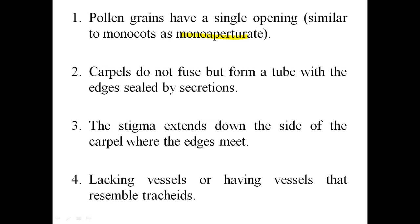The carpels are free and not fused together, but secretion at their edges causes them to form a tube. The stigma is extended downward along the sides of the carpels, especially near the edges. Basal angiosperms lack vessels — tracheids are present but vessels are absent. If vessels are present, they resemble tracheids.